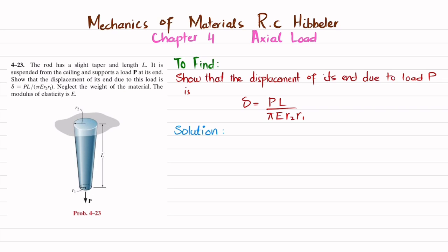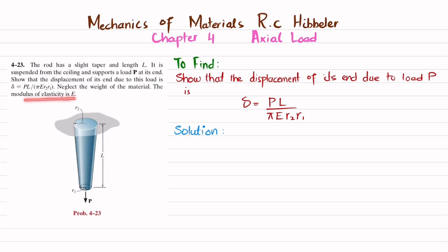The statement of the problem is: the rod has a slight taper and length L. It is suspended from a ceiling and supports a load P at its end. Show that the displacement of its end due to this load is the given expression. Neglect the weight of the material; the modulus of elasticity is E.